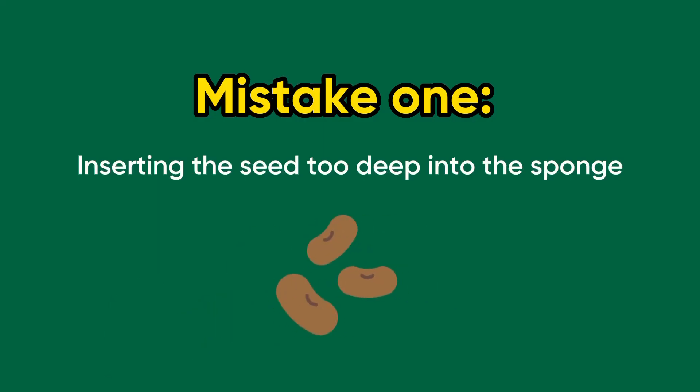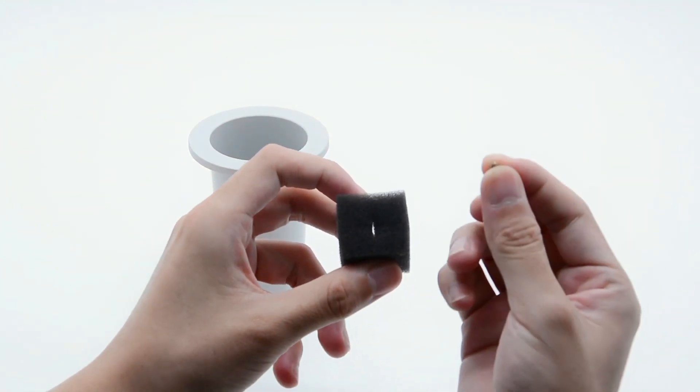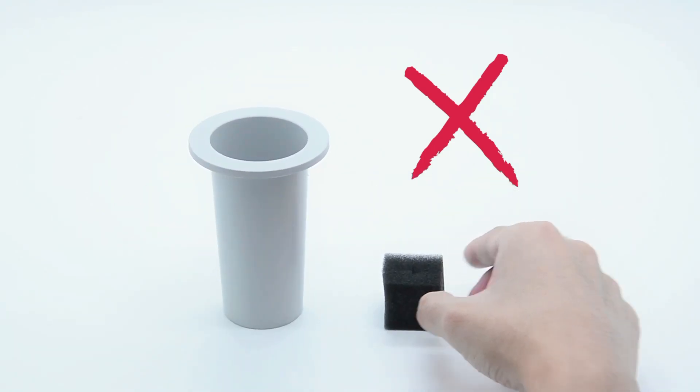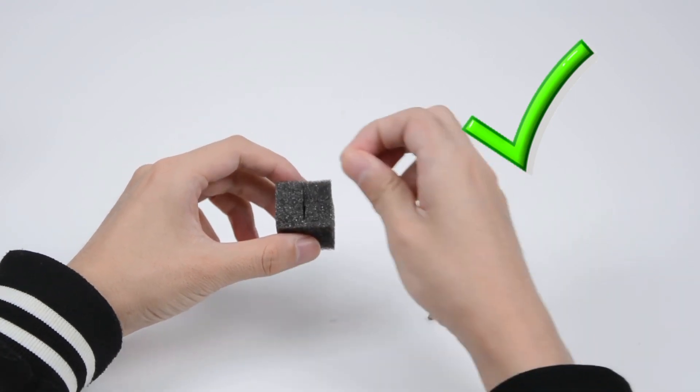Number 1. Inserting the seed too deep into the sponge. If you bury the seed too deep, it will be difficult for the leaves to detect the light and grow properly. Pushing the seed in too deep might result in the seed staying exactly where it is. To prevent this, place the seed in the sponge as shown here.